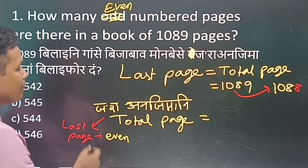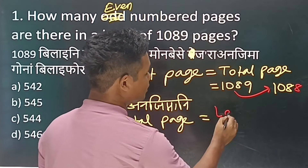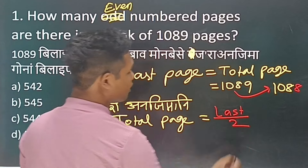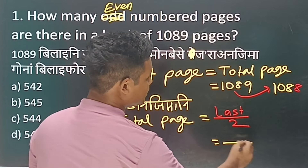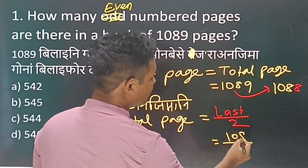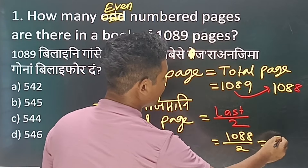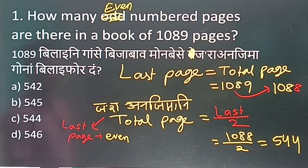If you use 1089 last down, you can use 1088. If you use 1088, it can use 1088. So let's take a look at this next one.